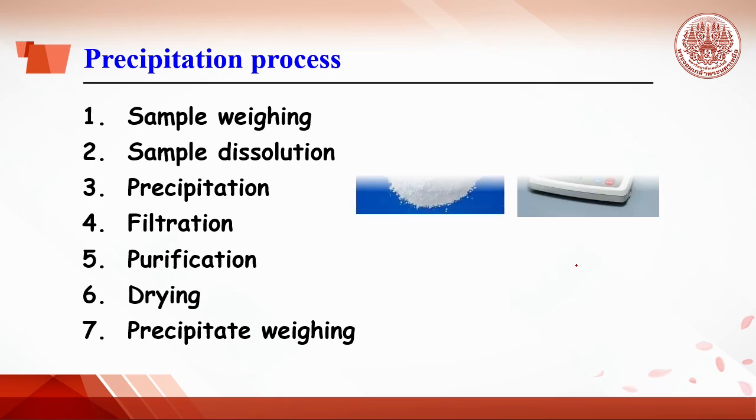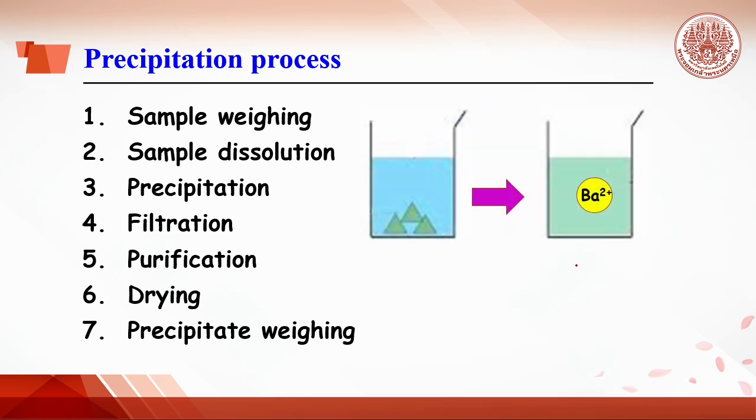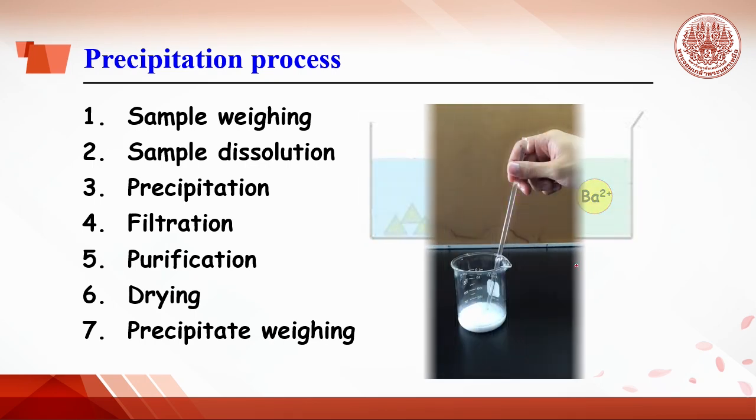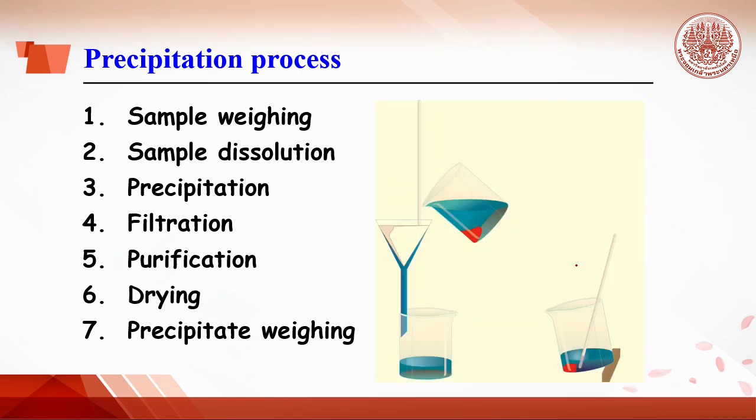The method of determination of barium in barium sulfate includes seven steps: sample weighing to get exact weight, sample dissolution to break down the barium compound into barium ion, precipitation with precipitant, then filtration, purification, drying of the precipitate. After weighing precipitate, the percentage of barium in the sample will be calculated.